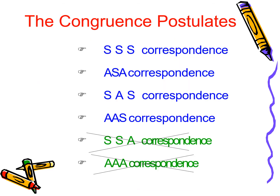Let us revise all four congruence criteria once again: Side-Side-Side, Angle-Side-Angle (where the side must be included), Side-Angle-Side (where the angle must be included), and Angle-Angle-Side. Remember that Side-Side-Angle and Angle-Angle-Angle correspondences do not exist. There is one more criteria — Right Hypotenuse Side (RHS) — which we use only for right-angle triangles, and that along with questions based on all four criteria will be discussed in the next video.